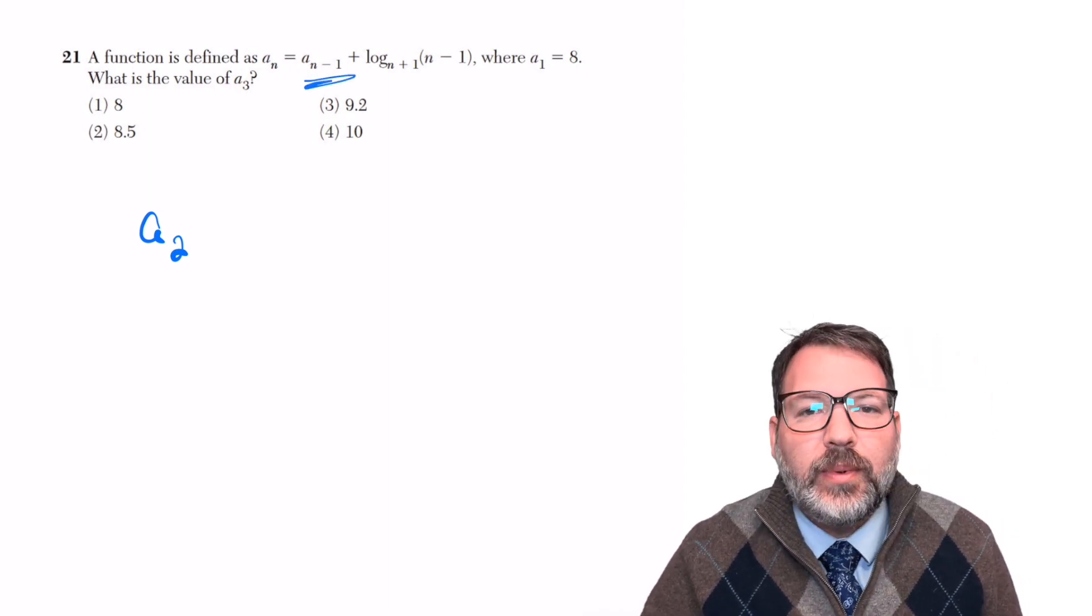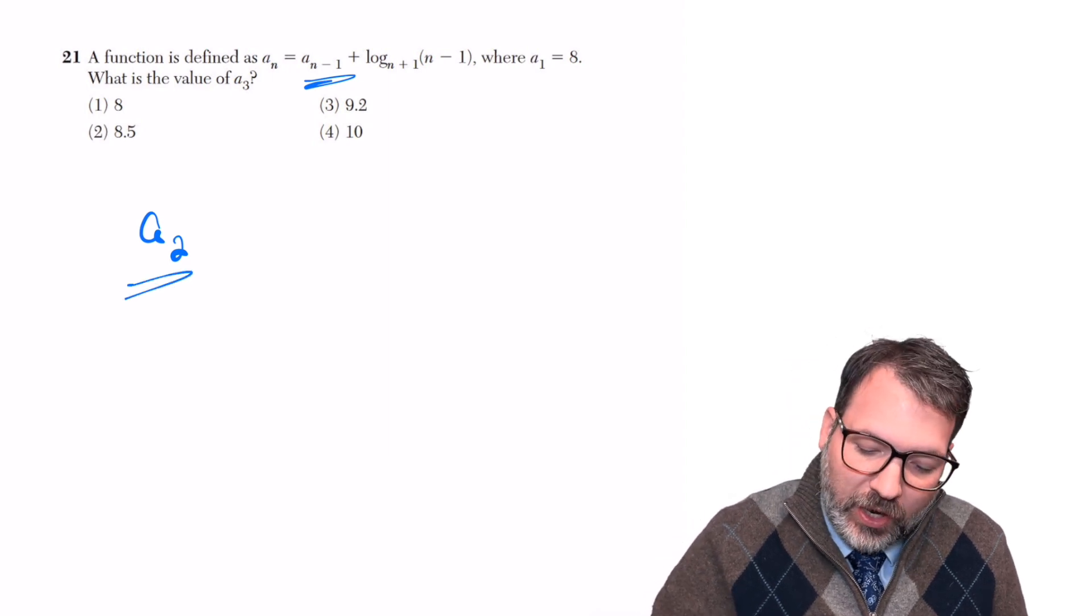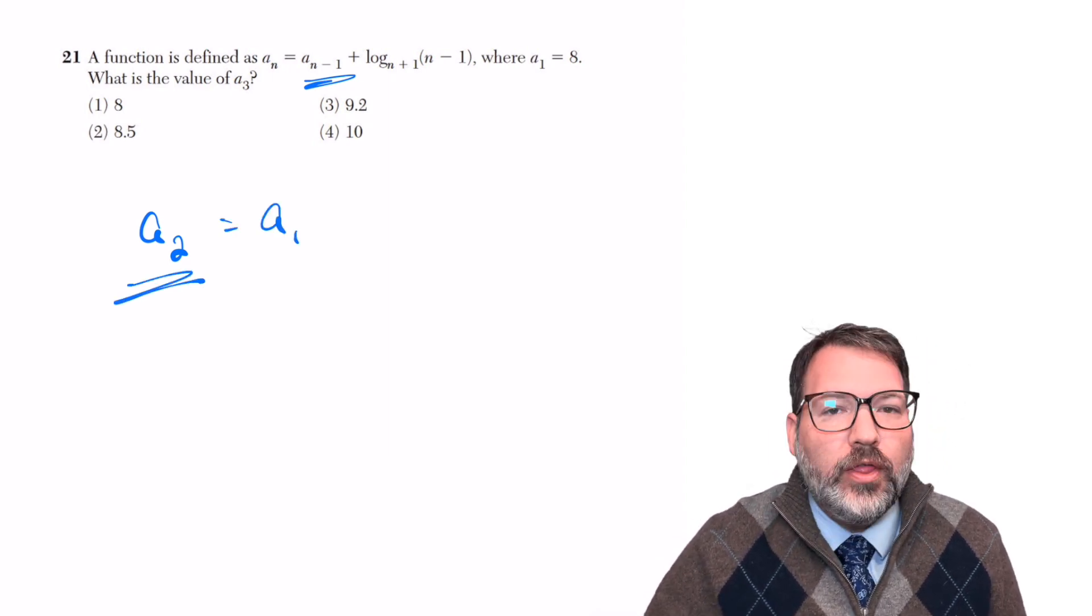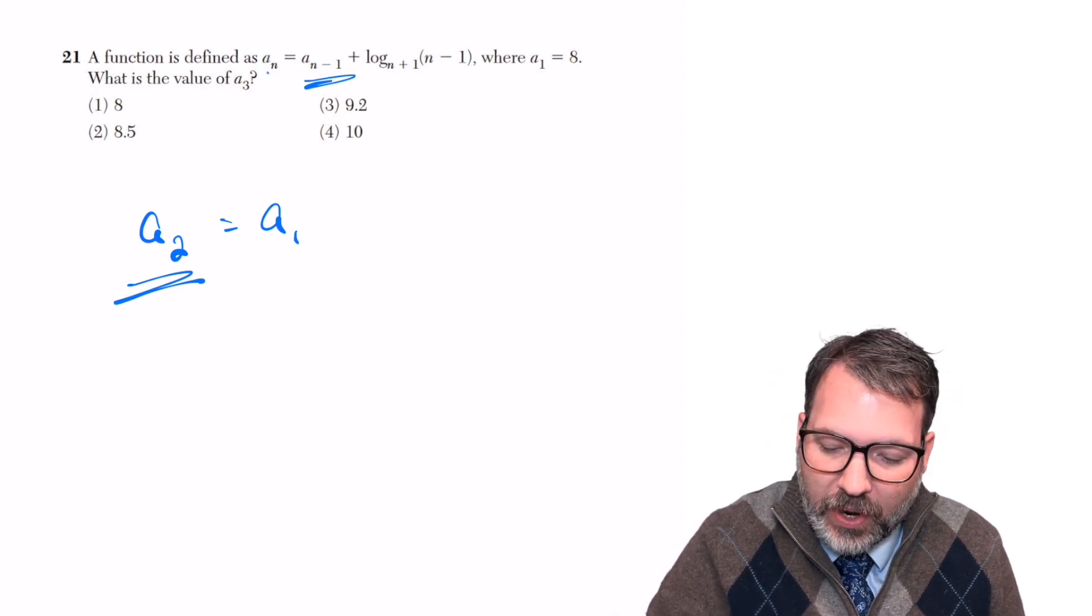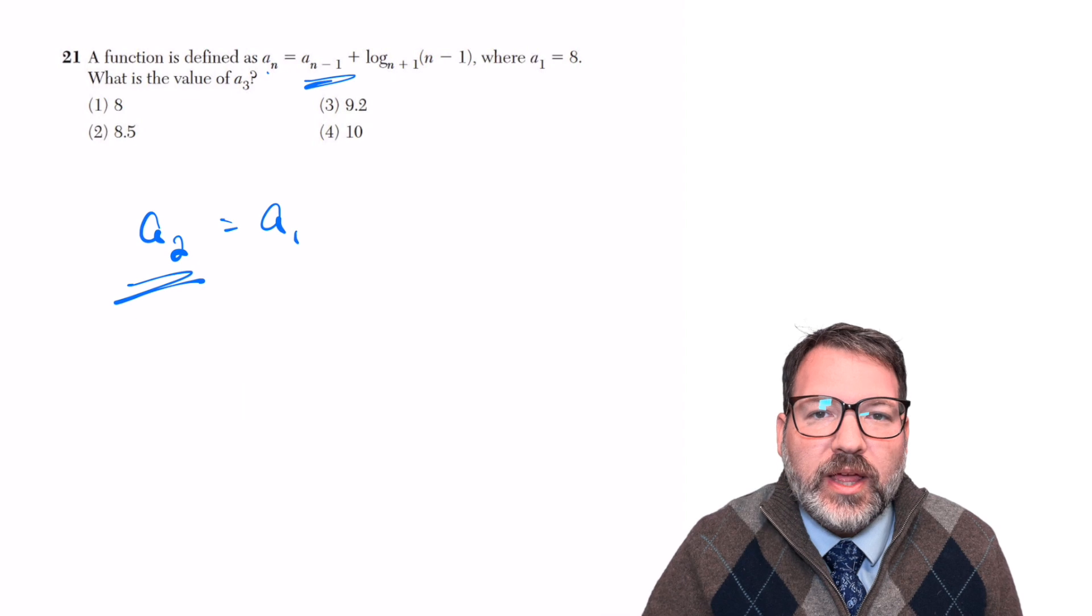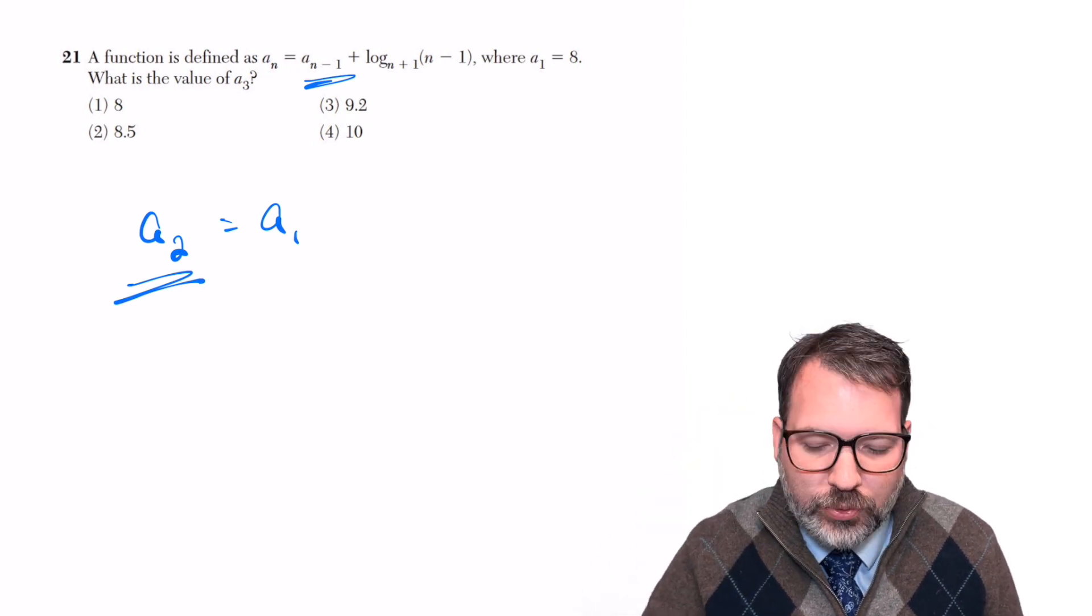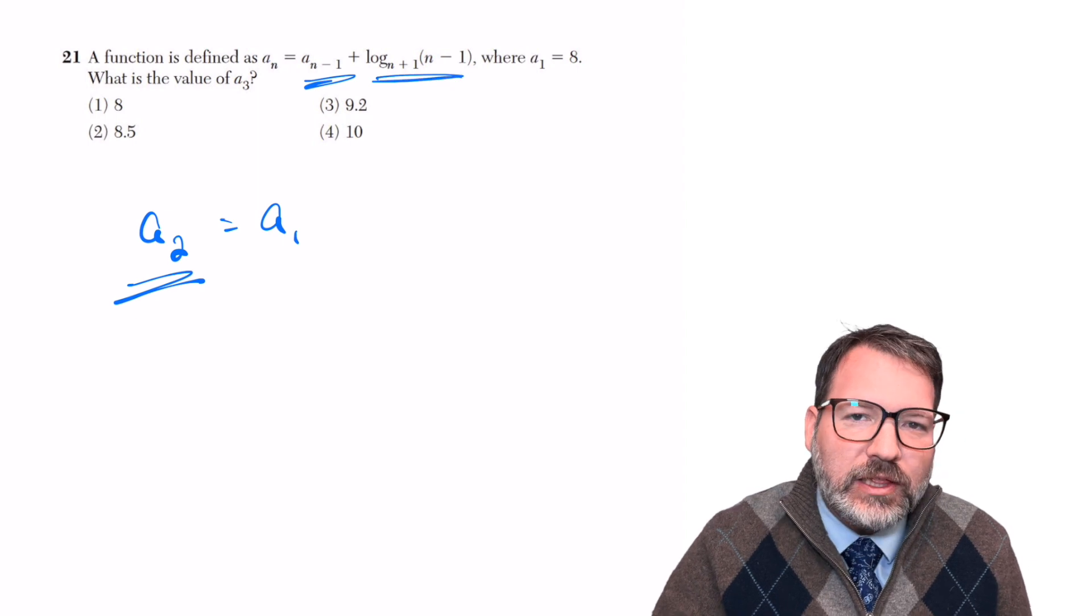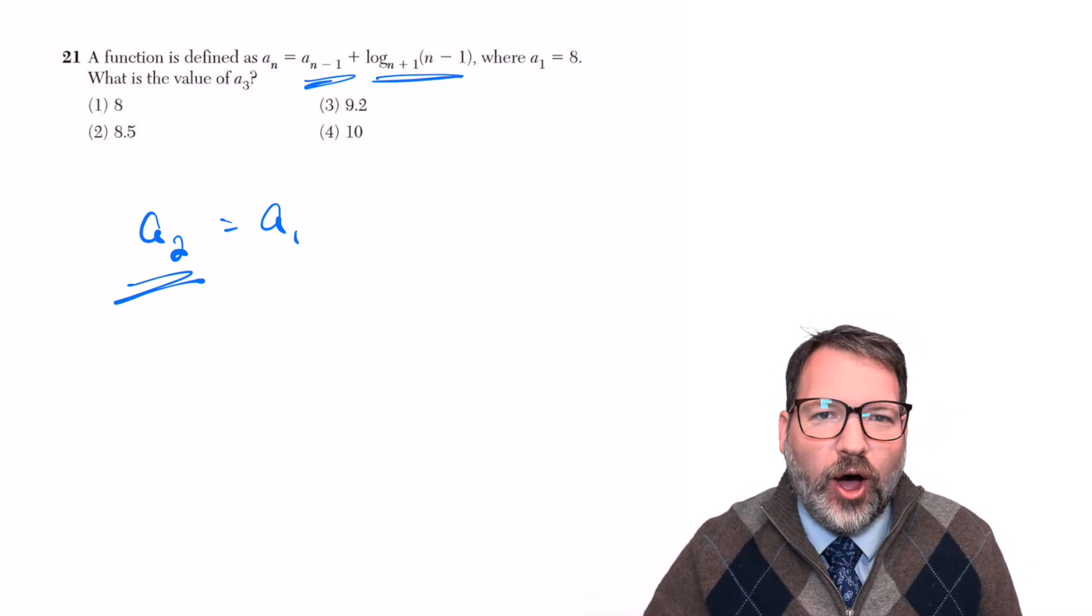We go on: a sub n equals a sub n minus 1. A pretty typical use of this kind of notation. We're saying the next term in the sequence equals the previous term in the sequence. a sub n equals a sub n minus 1, and then we do something to that previous term. In this case, the something that we do is we take a log base n plus 1, and this is where this just goes off the rails.